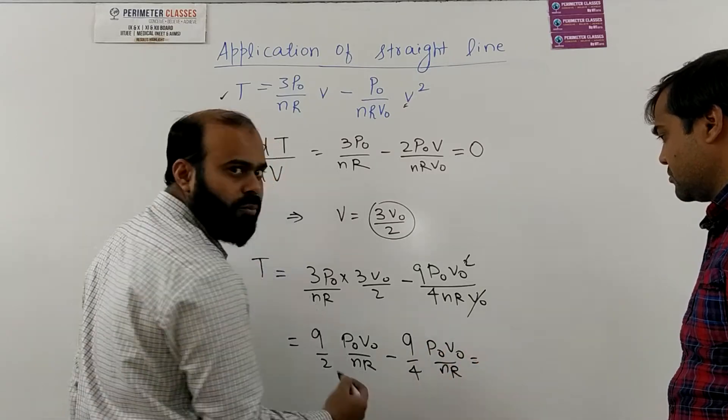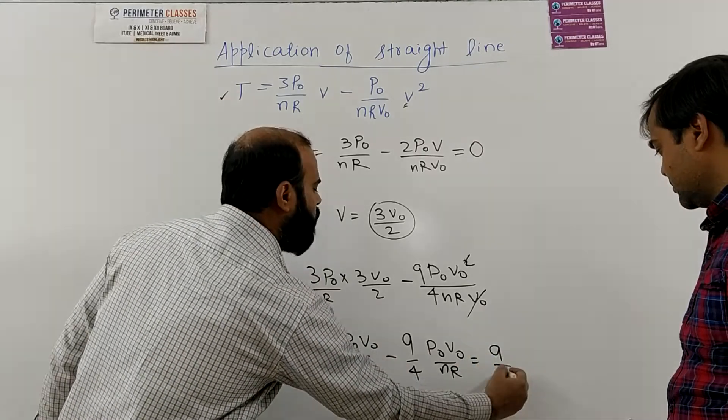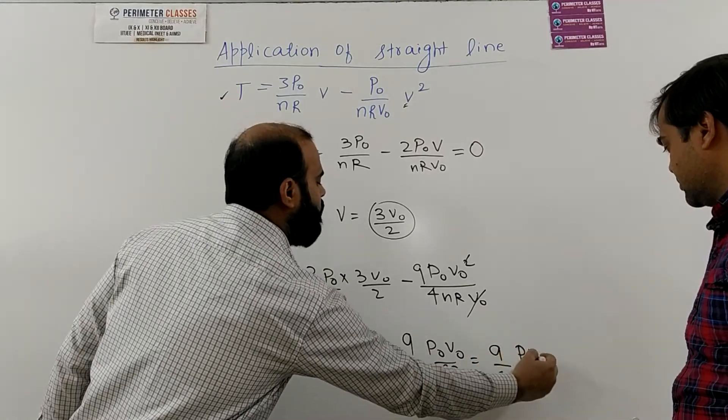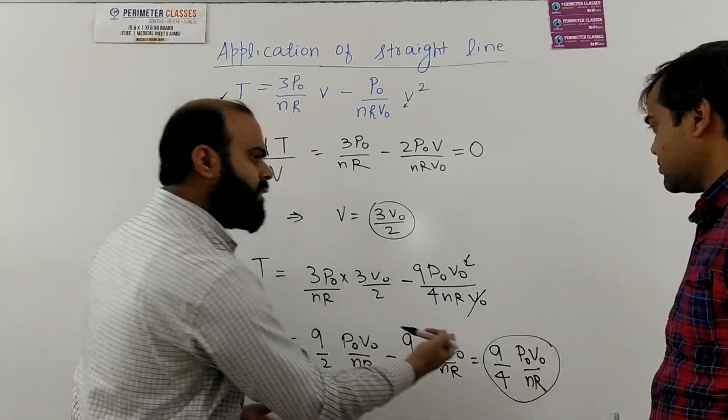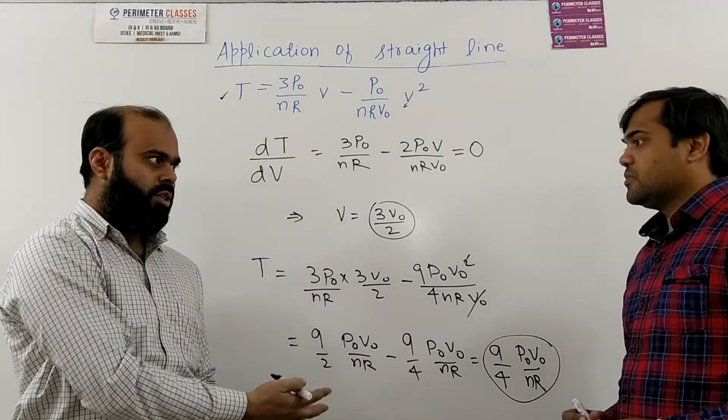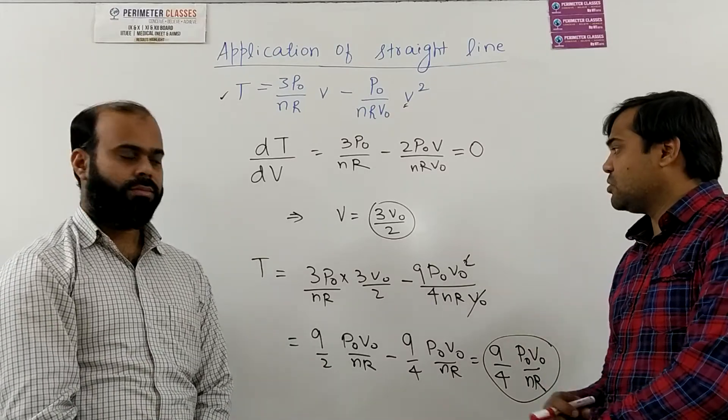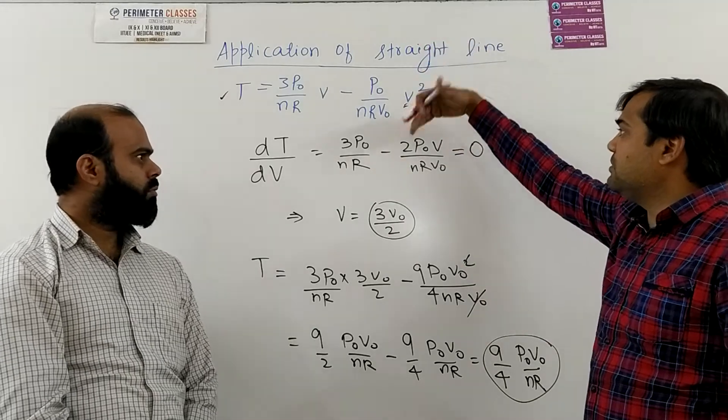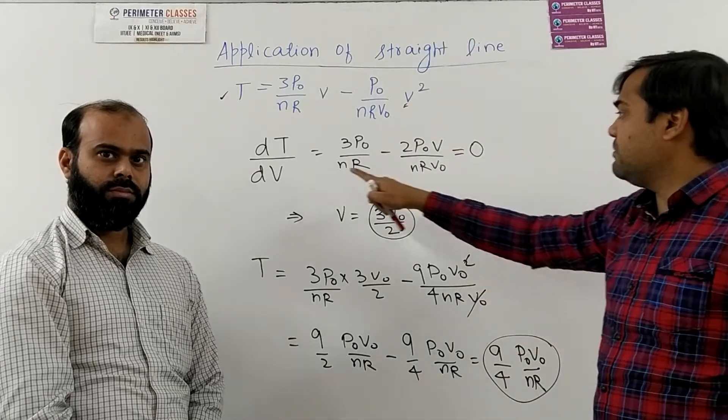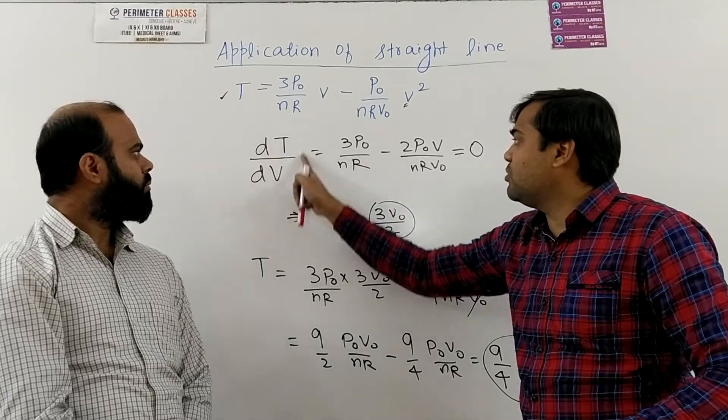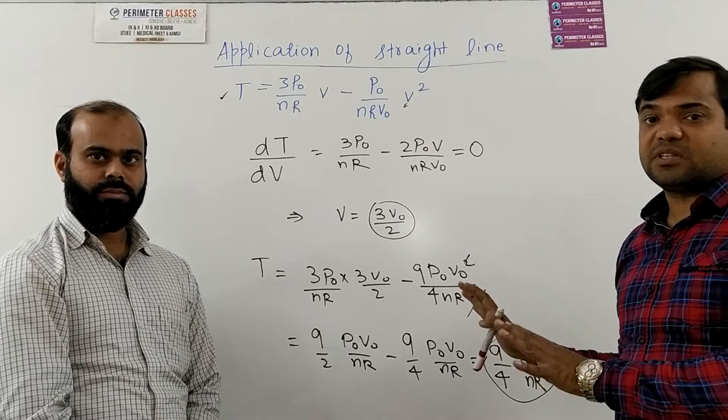So what is the maximum temperature that would become 9 by 4P0 V0 by nR. So sir I think this is the temperature which is the maximum temperature. The graph was given to you and you have been asked to solve the steps. The previous one was discussed in the last lecture. I have given the equation that we have to equate this term to 0 and this is the way in which we have to solve this question.